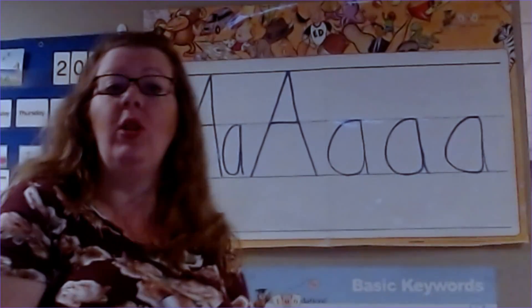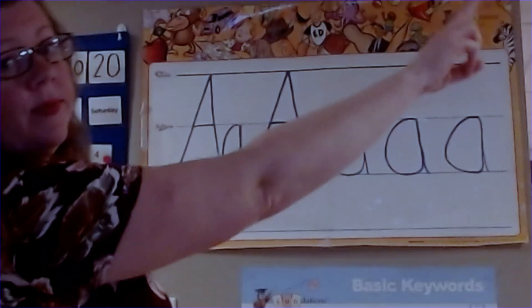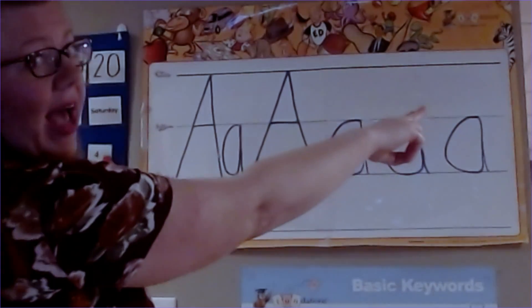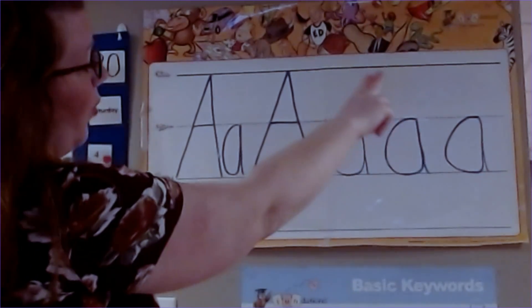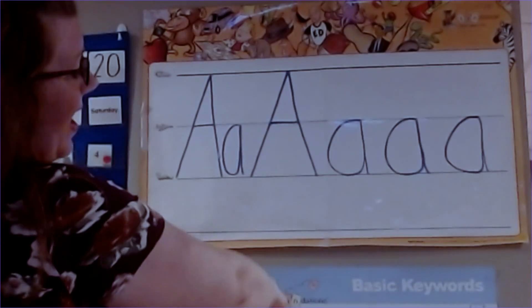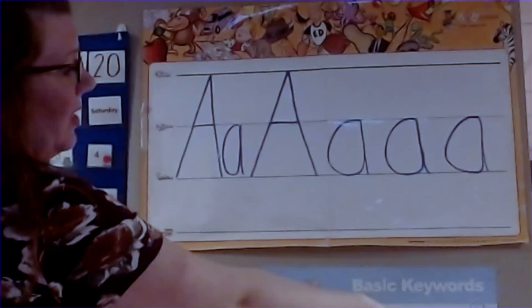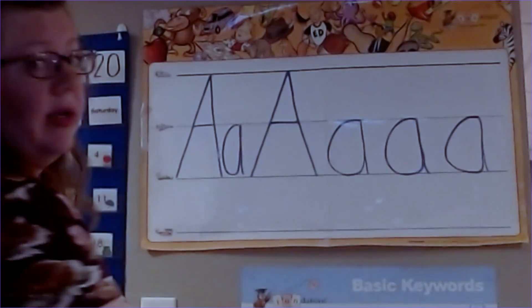Let's sky write lowercase a. Touch the plain line with your sky writing fingers. Go around, touch the grass, go up, touch the plain line, and down, touch the grass. Let's do it again.